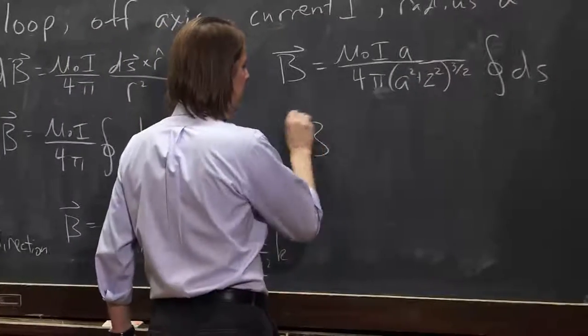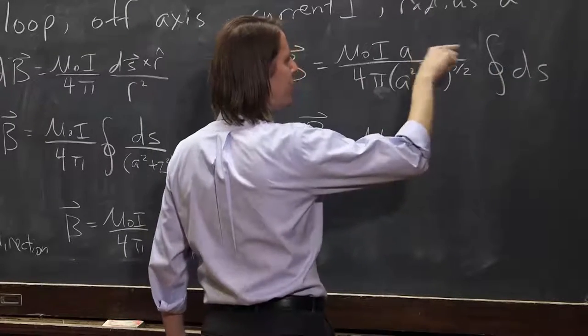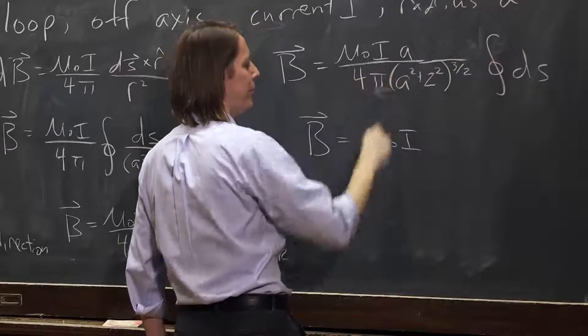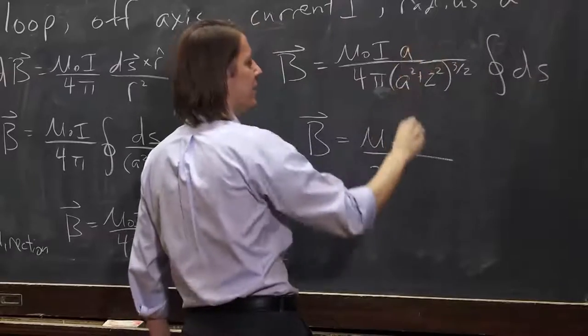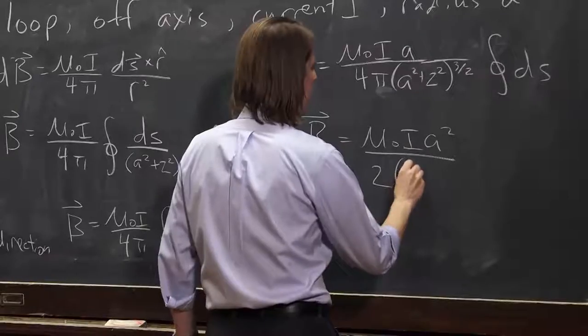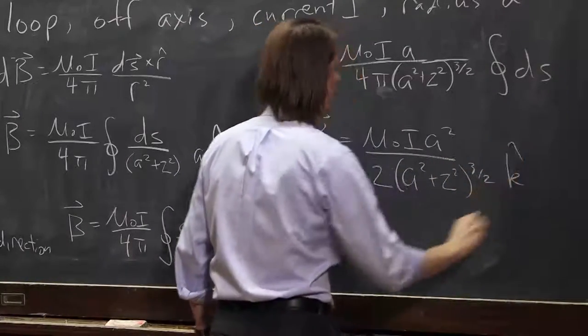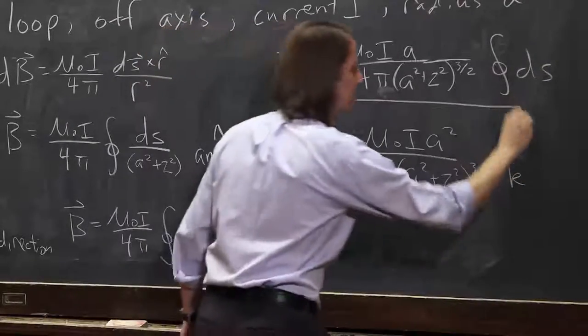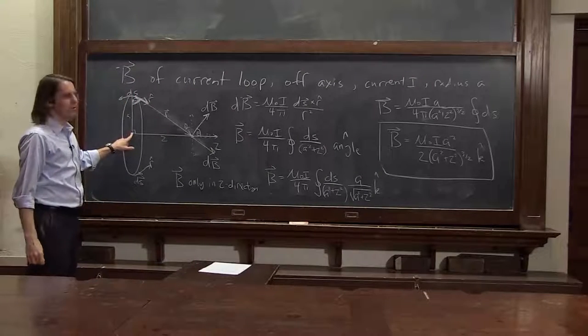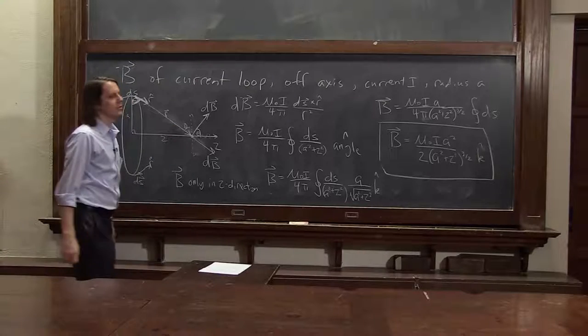So B, then, is mu naught I 2 pi a. So 2 pi is up here. The 2 pi is going to cancel that 4 pi. And just leave you with the 2 down here. That a is going to square that a. Mu naught I a squared over 2 times a squared plus z squared to the three halves all in the k-hat direction. So there you go. Now, not only do we know the B-field in the center of the loop, we know it for all distances along the axis of the loop.